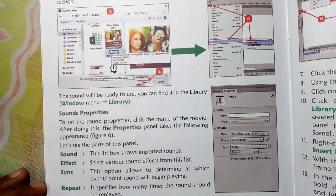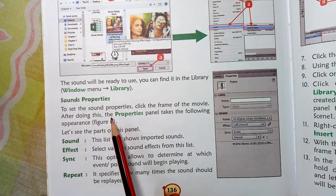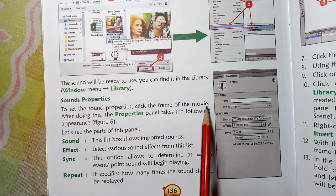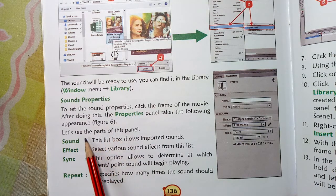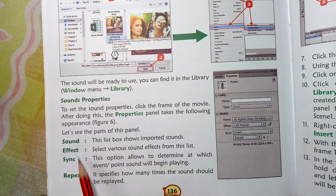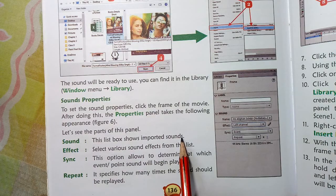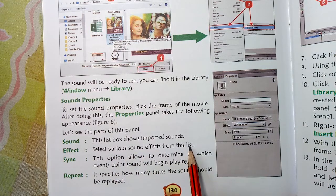These are the sound properties. To set the sound properties, click the frame of the movie. After doing this, the Properties panel takes the following appearance. This list box shows the imported sound which you have selected.